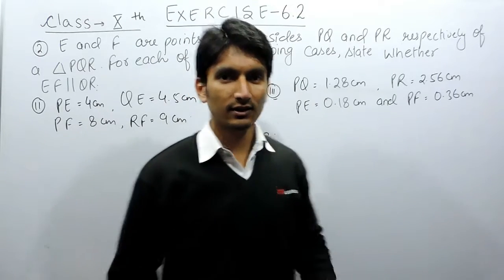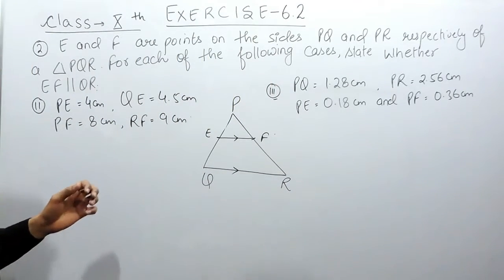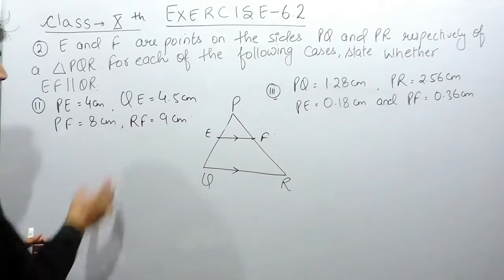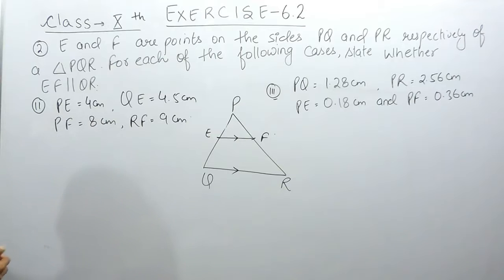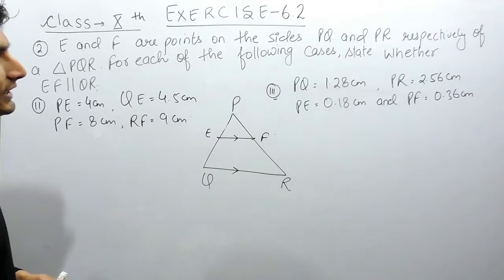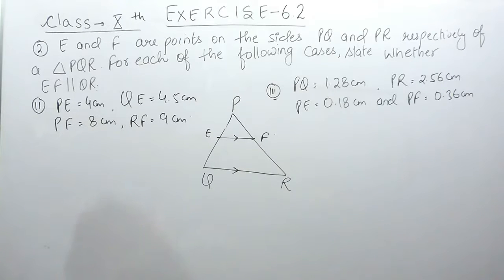Hello everyone. In this video we are going to solve question number 2 of exercise 6.2, and we are going to solve the last two parts of this question. In this question, E and F are the points on the side PQ and PR respectively of triangle PQR. For each of the following cases, state whether EF is parallel to QR.